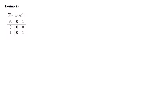Let us look at a few examples of rings that are particularly interesting. The first ring has the elements 0 and 1, with addition modulo 2 and multiplication modulo 2 as operations. The unit here is the element 1, because 1 has a multiplicative inverse.